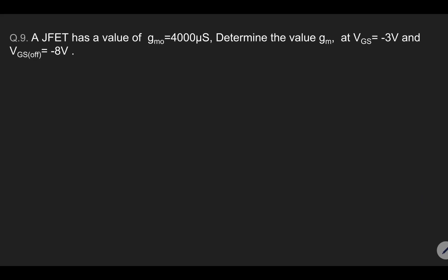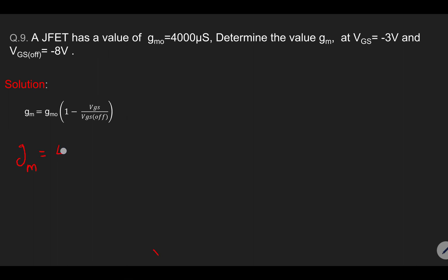Again for a JFET, we are given maximum transconductance of 4000 micro siemens and need to calculate GM. Substituting: transconductance equals the maximum value 4000 micro siemens, times 1 minus VGS (given as minus 3 volt) divided by minus 8 volt. The value of transconductance comes out to be 2500 micro siemens.